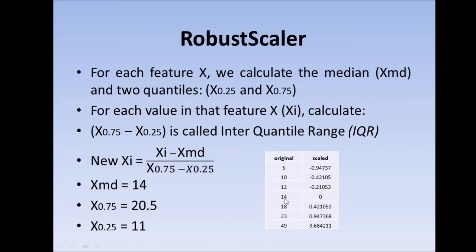Similarly, my 75th quantile will be exactly between 14 and 49. So the value should be between 18 and 23. So that value is 18 plus 23 by 2, which is 20.5. So this is my 75th quantile and 11 is my 25th quantile, my median is 14.